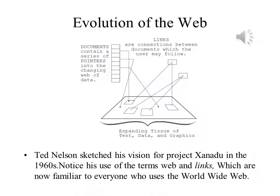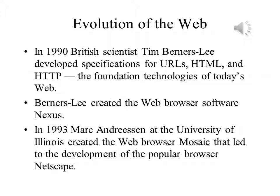Ted Nelson did not invent the Web, although his overall design became the basis for it. Documents had links to other documents on the Web, and these links were the basis for relating documents and finding them. Nelson called his project Xanadu, but he wasn't the one who saw it through to actual implementation. The Web was actually developed by British physicist Tim Berners-Lee, who was working at CERN doing research in particle physics. He developed what became the Web specifically to make it easier to share experimental data with colleagues elsewhere.